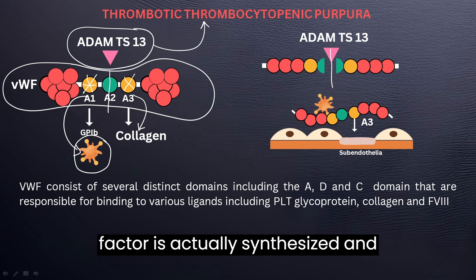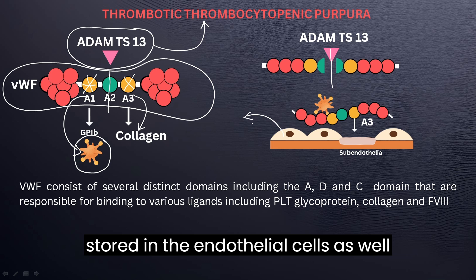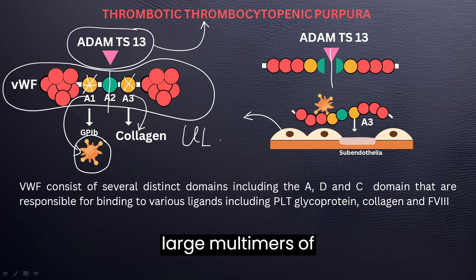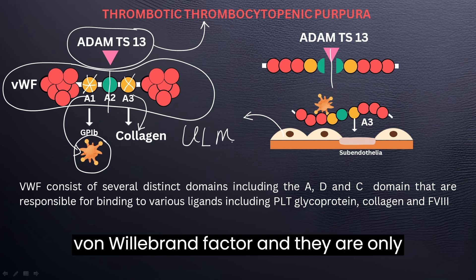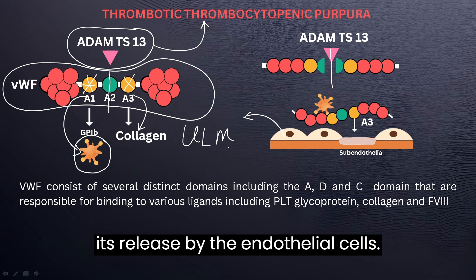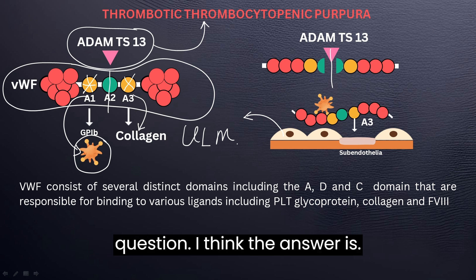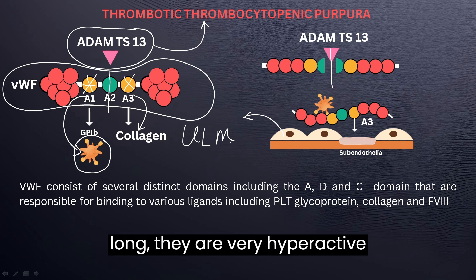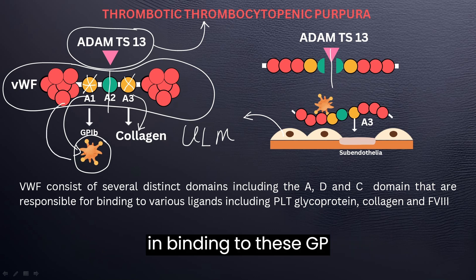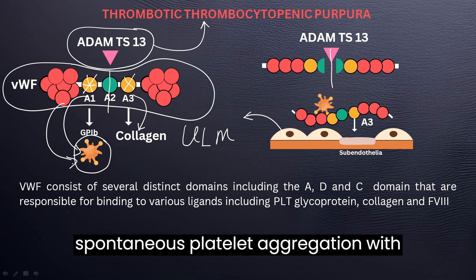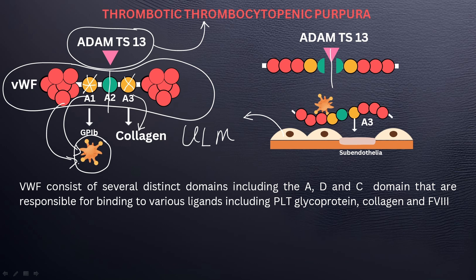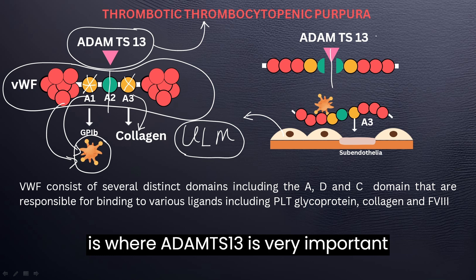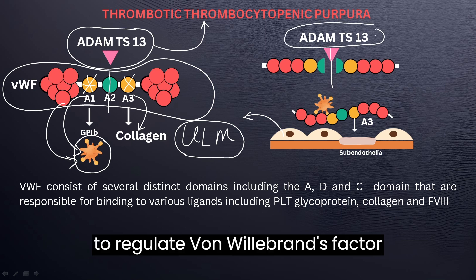Von Willebrand factor is synthesized and stored in endothelial cells as well as megakaryocytes. We refer to these as ultra-large multimers of von Willebrand factor, and they are only briefly present in plasma after release by the endothelial cells. This is due to their high prothrombotic activity — if left in plasma too long, they are very hyperactive in binding to GP1b, leading to spontaneous platelet aggregation with formation of microthrombi. So it is very important that these ultra-large multimers are regulated, and this is where ADAMTS13 plays a critical role.